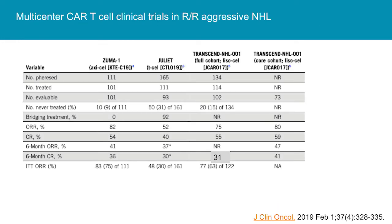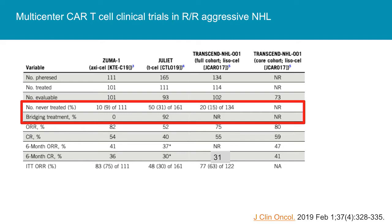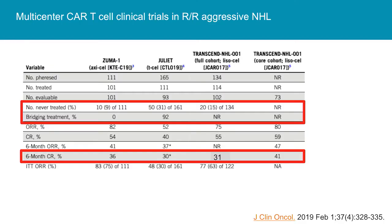Summarizing the three products: with the Novartis product Kymriah, there were some difficulties with manufacturing — a highly technical process everyone is still trying to figure out — and actually a third of patients never even received their cells, requiring bridging chemotherapy to sustain patients awaiting infusion. The CR rate has actually been largely similar despite differences in manufacturing and constructs, with durable CR rates on the order of 30%. Looking at toxicity, the Liso-cel product seems to have less high-grade CRS, though clinicians have become more proactive in treating CRS, which may be a confounding factor.